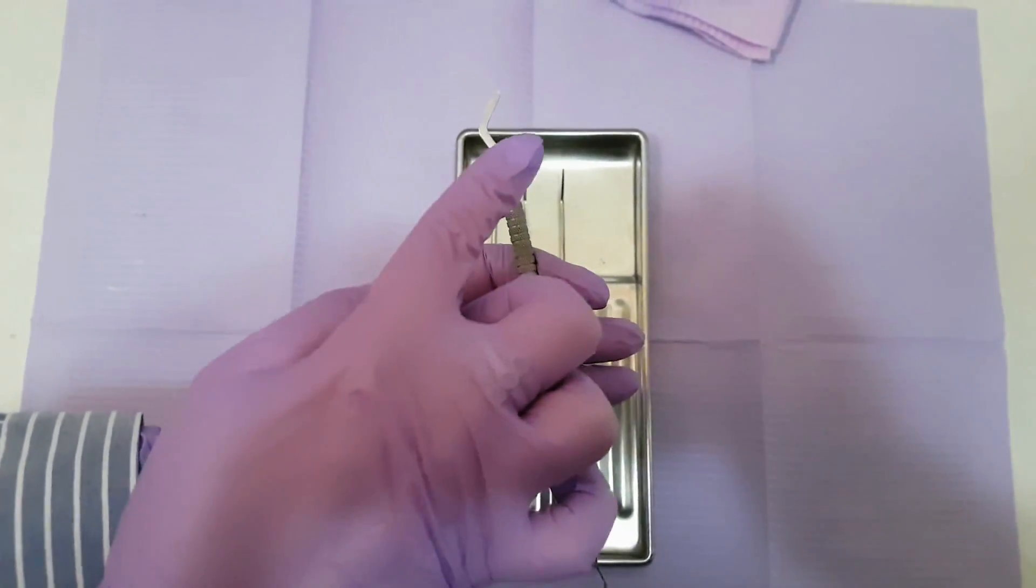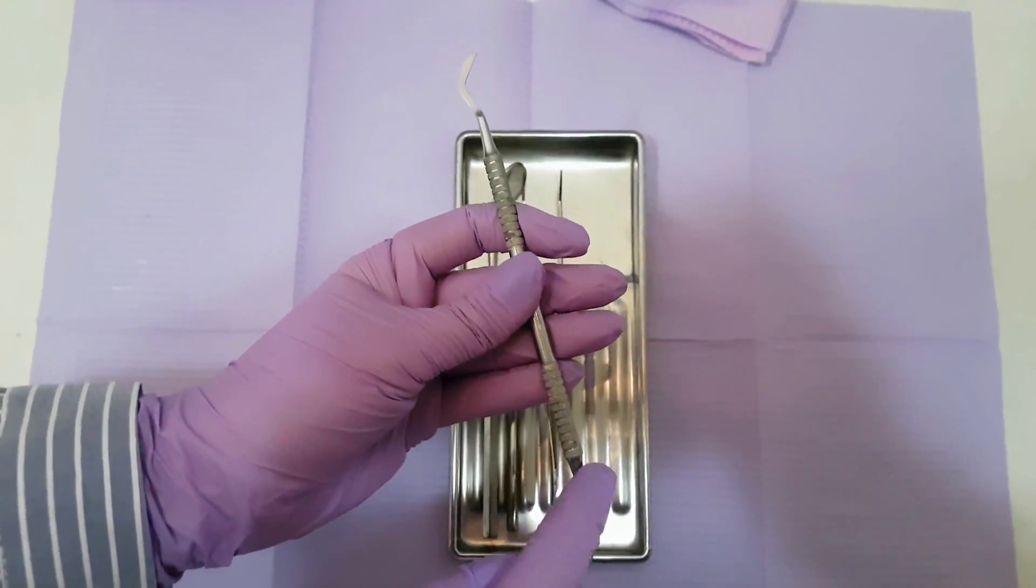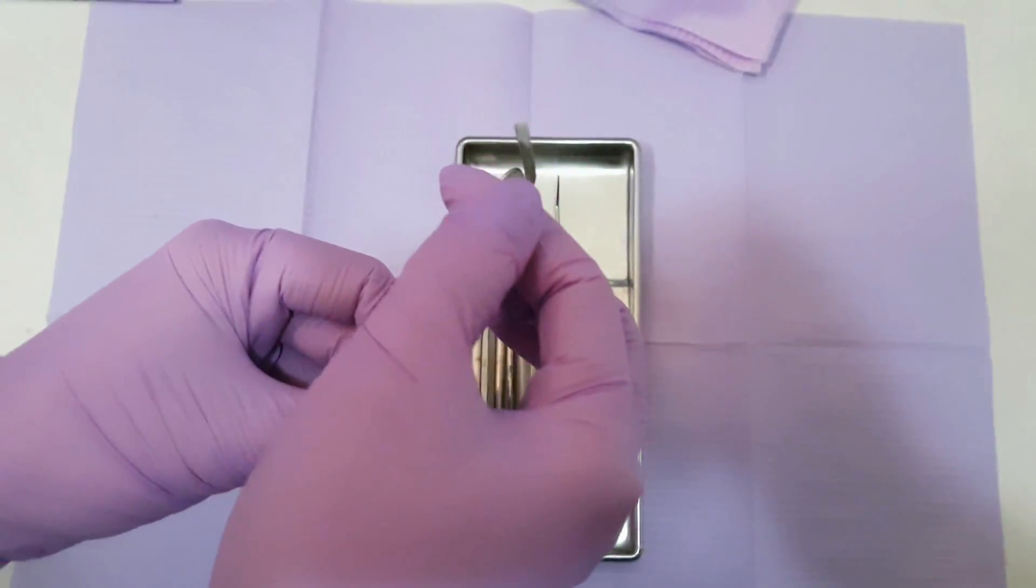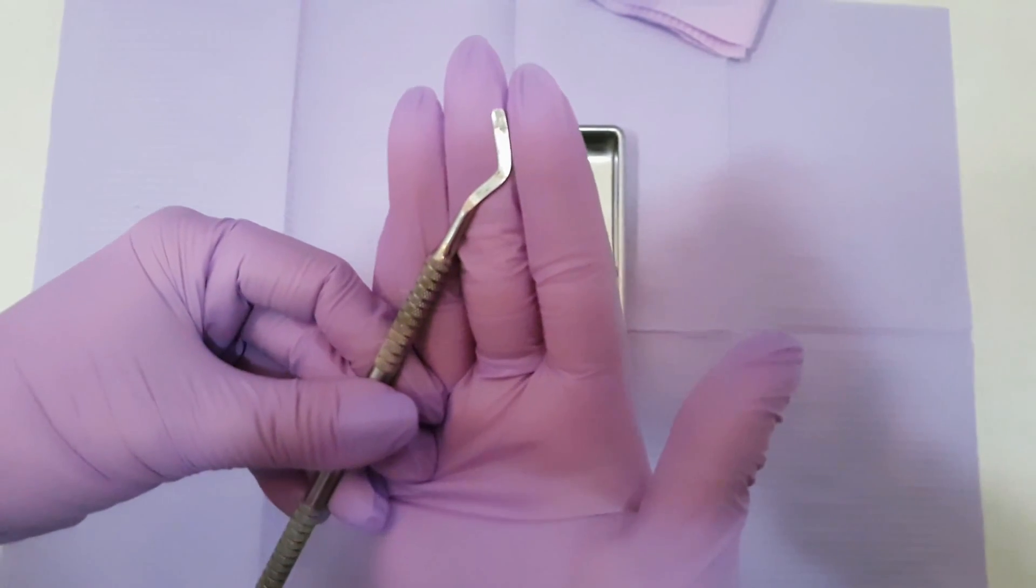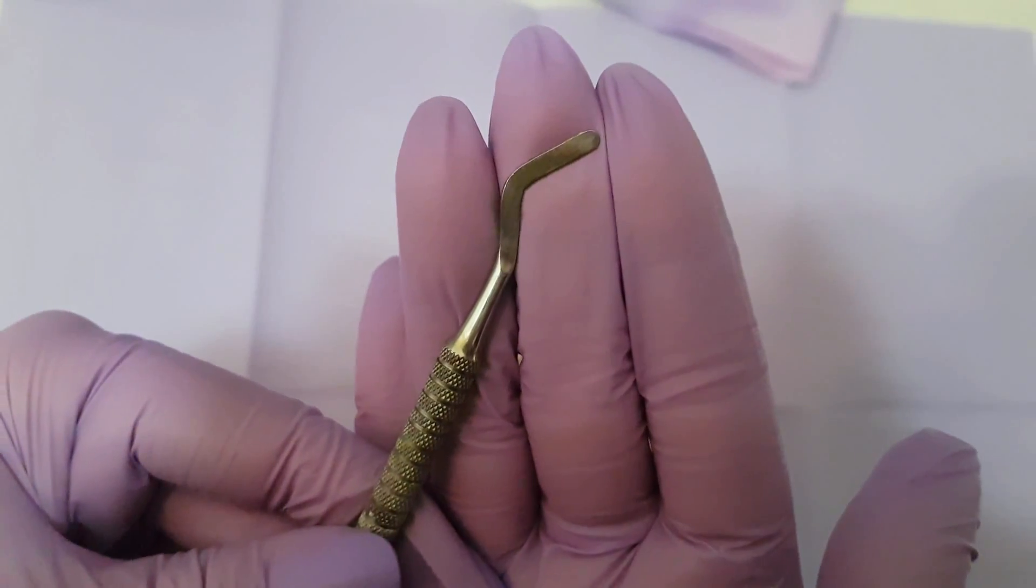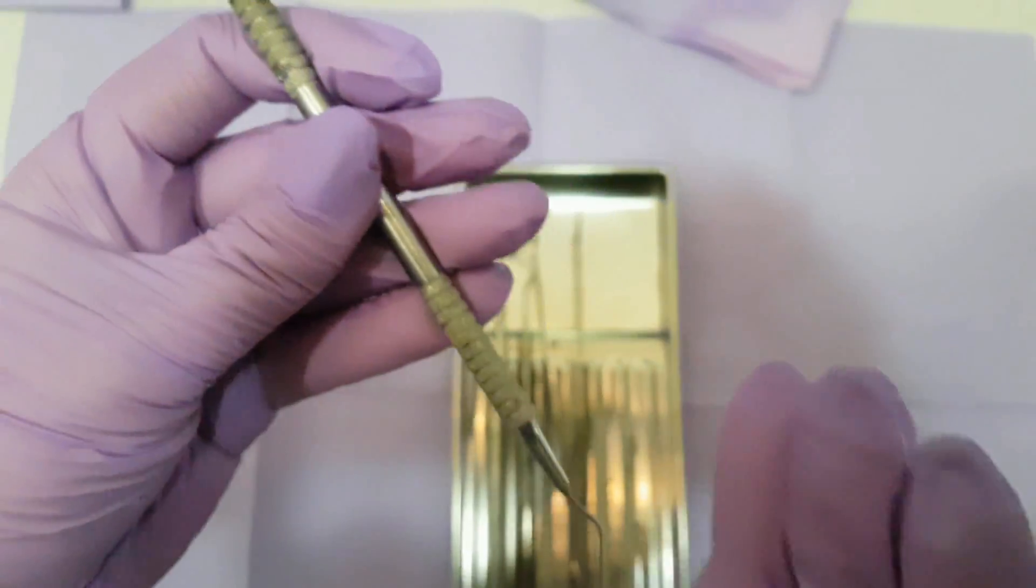And last we have the plastic instrument. This instrument has two working ends and is mainly used to work with dental fillings for the tooth when we treat cavities.